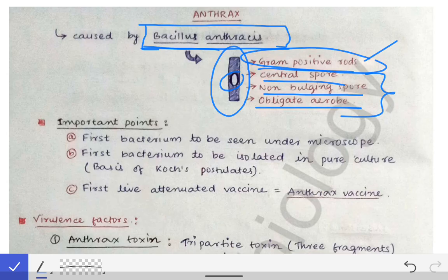In other points, Bacillus anthracis is in complete contrast with Clostridium. Bacillus anthracis has a central spore, a non-bulging spore, and is an obligate aerobic organism — meaning it needs oxygen for its growth and cannot grow without oxygen.